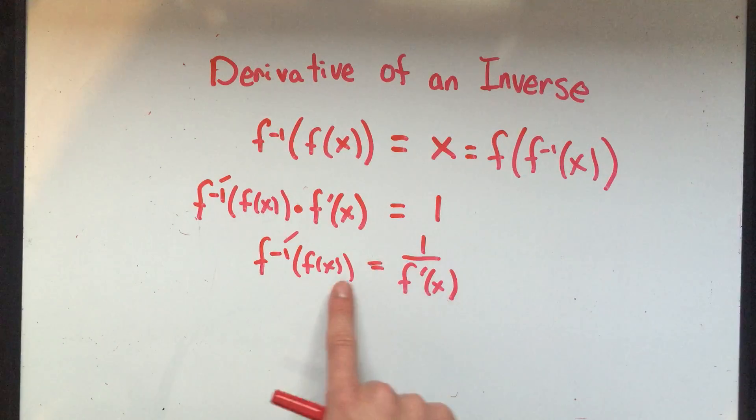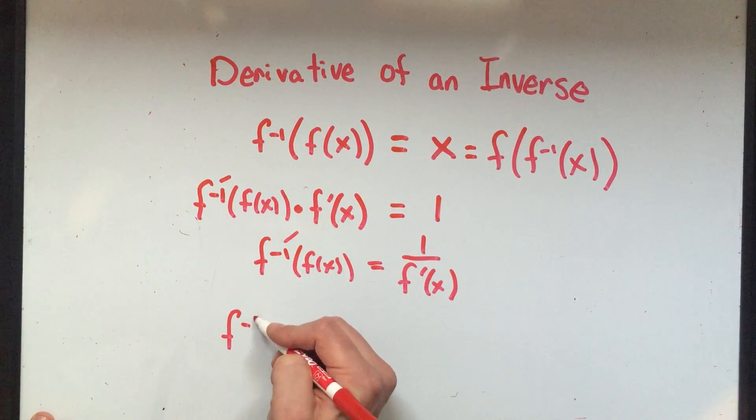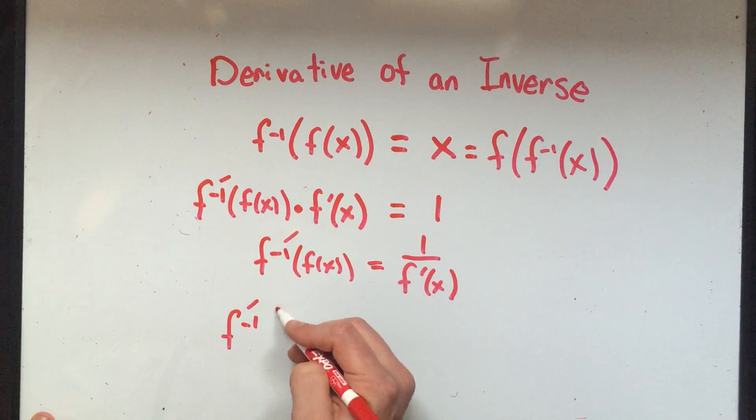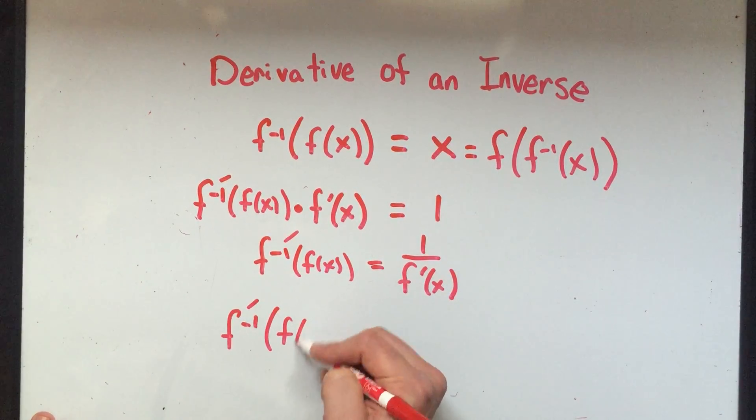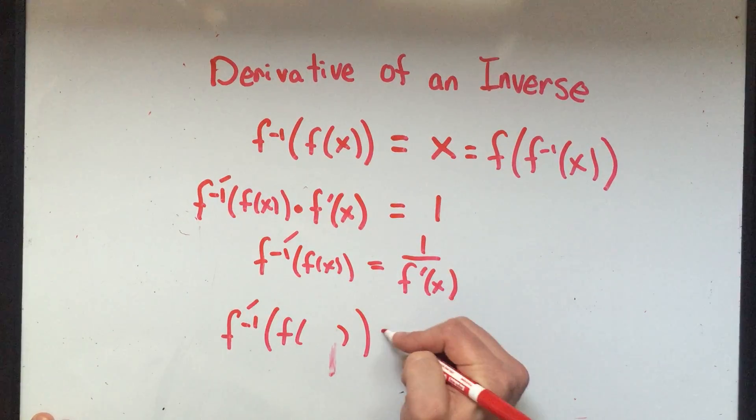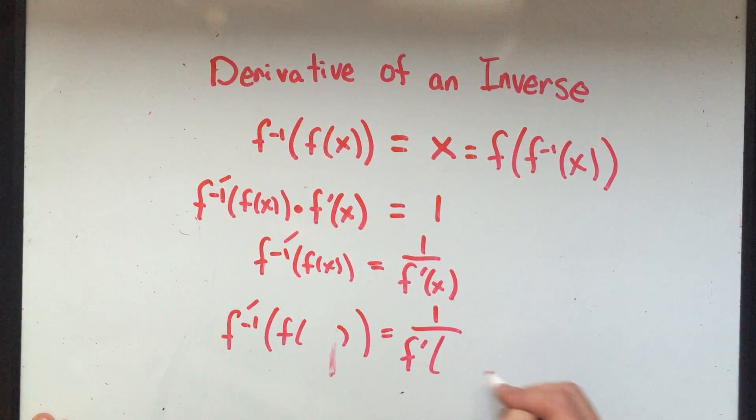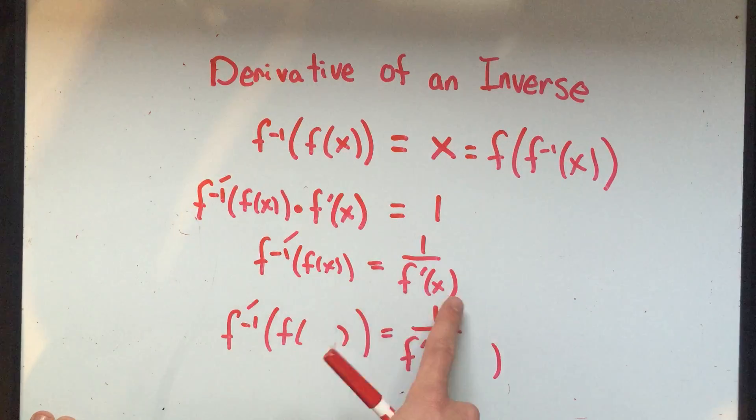I'm going to write both sides without the x plugged in just so you can really see what I'm doing. So I just wrote the line I just had but I didn't write the x's. That means whatever I put here, I've got to put here and vice versa.